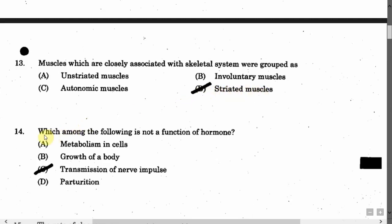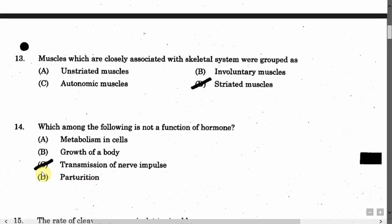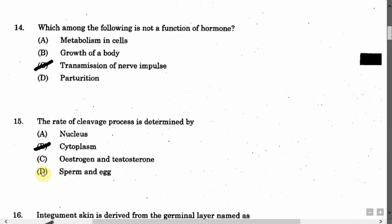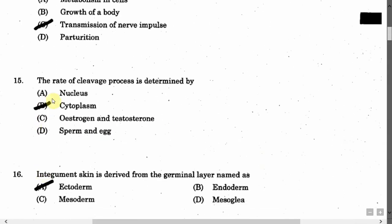The next question is: Which among the following is not a function of a hormone? Option A: Metabolism in cells. Option B: Growth of a body. Option C: Transmission of nerve impulse. Option D: Parturition. The correct answer is Option C, that is transmission of nerve impulse.